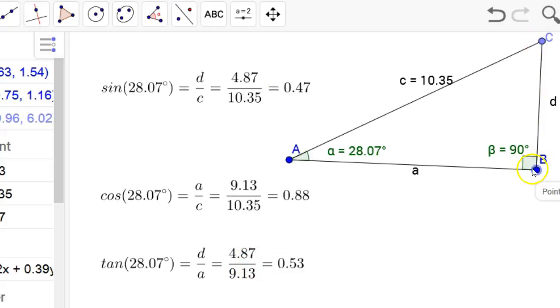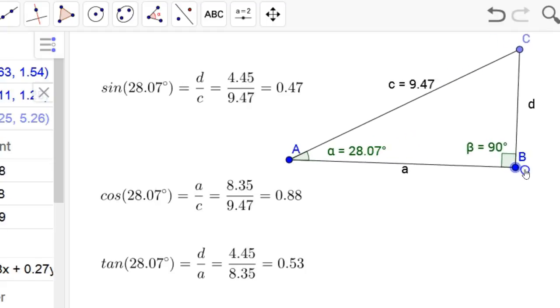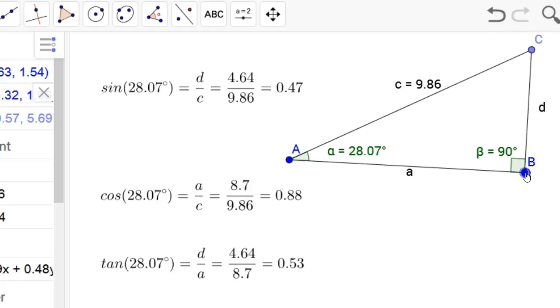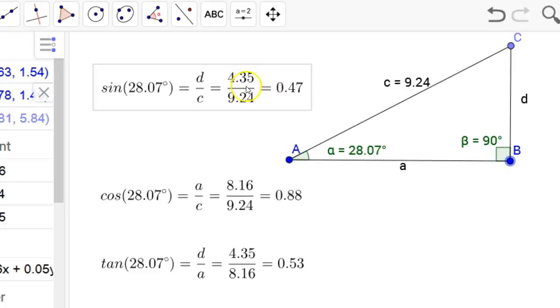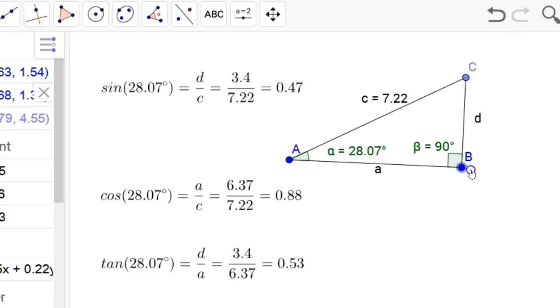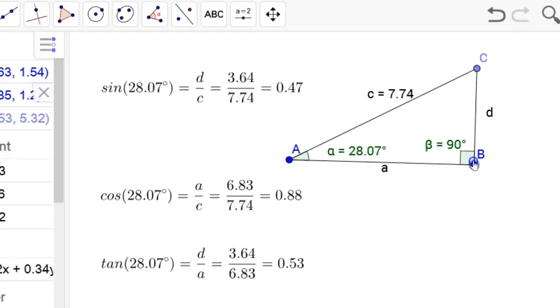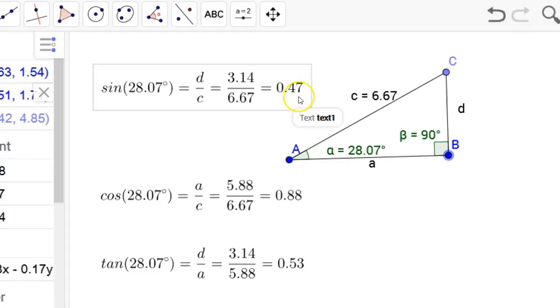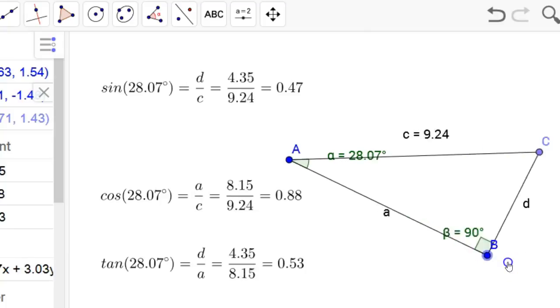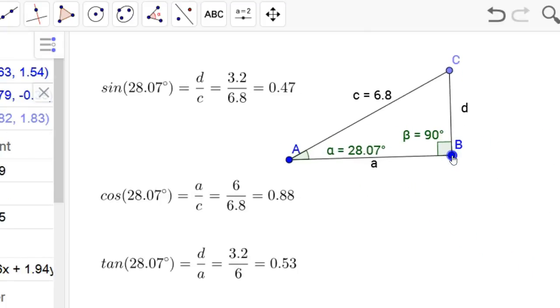But if I shrink and expand that, these side lengths change, get smaller and bigger. But when you divide those ratios, they stay constant. The ratios are always the same number. Because these are, I mean, I didn't just put 0.47 here. That is 3.14 divided by 6.67. That is 0.47. No matter how I change it, those ratios stay the same.